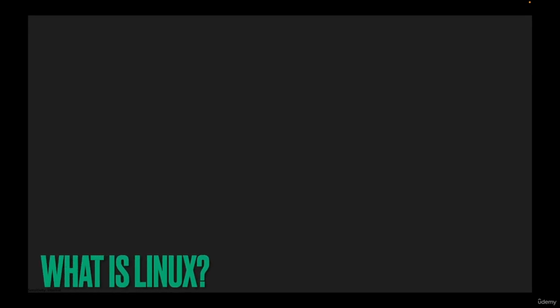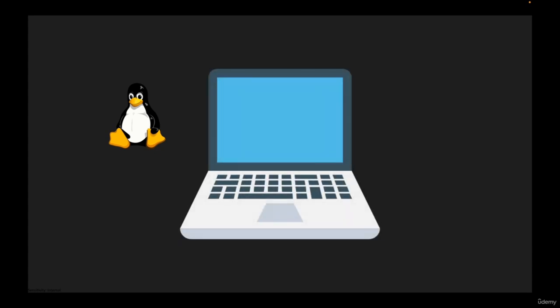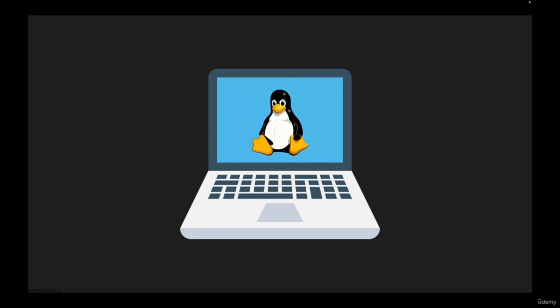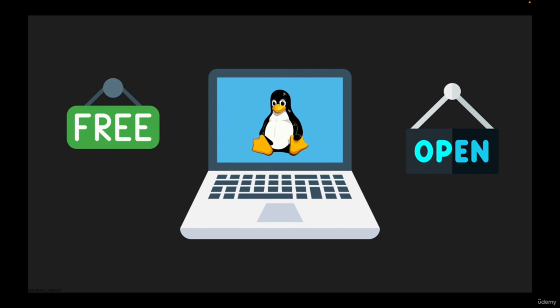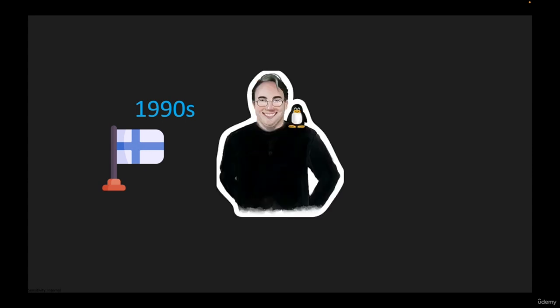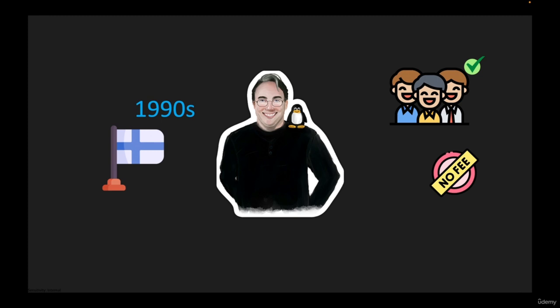Hello and welcome to this exciting tutorial on Linux. In this video we are going to explore what Linux is and why it is so awesome. At its most basic level, Linux is an operating system — it's the software that runs on your computer and allows you to interact with it. It is a free and open source operating system. Linux was created in the early 1990s by a Finnish programmer named Linus Torvalds, who wanted to make an operating system accessible to everyone without restrictive licensing or fees. Today Linux is used by millions of people worldwide, from hobbyists and students to scientists and developers.